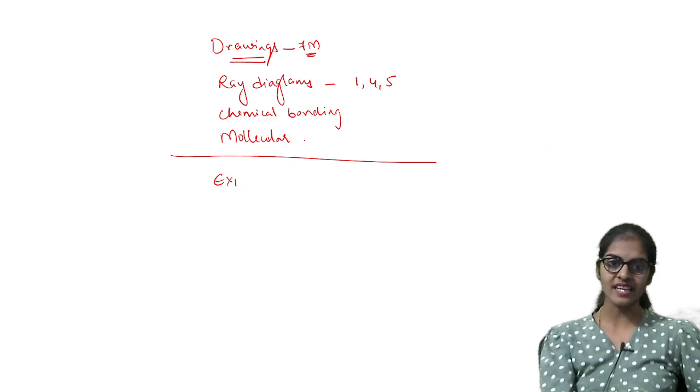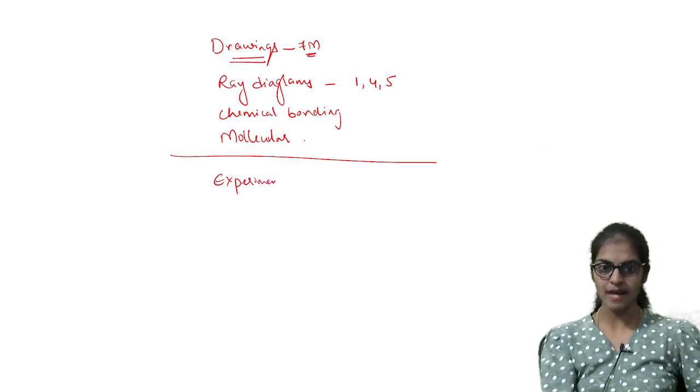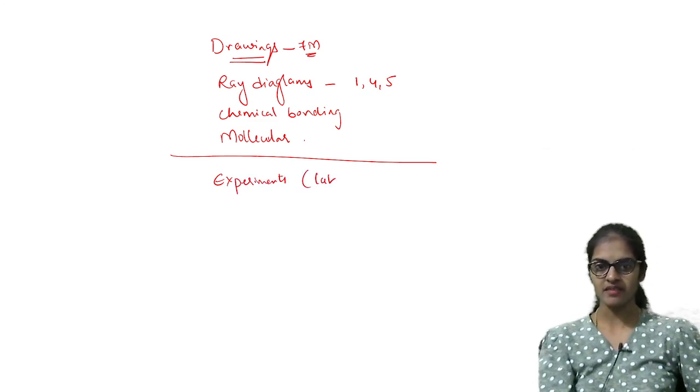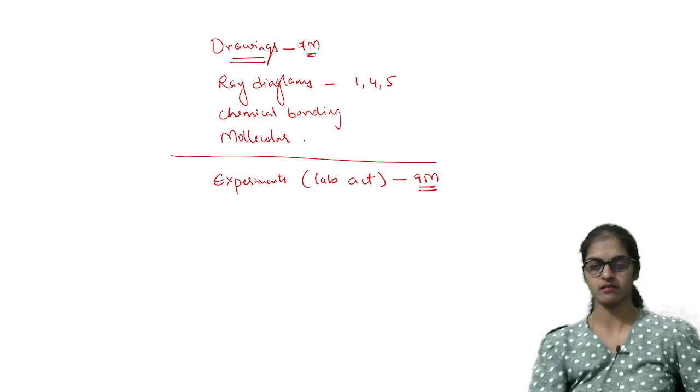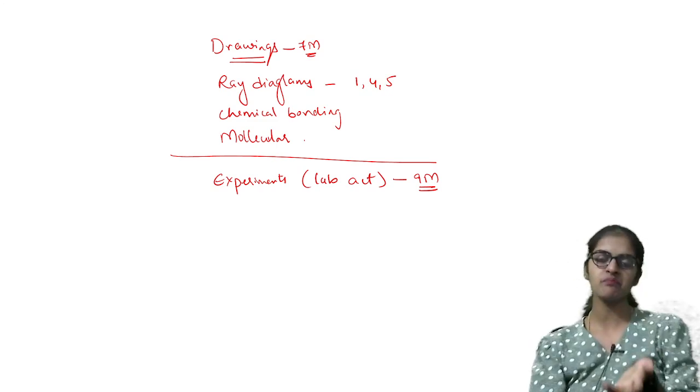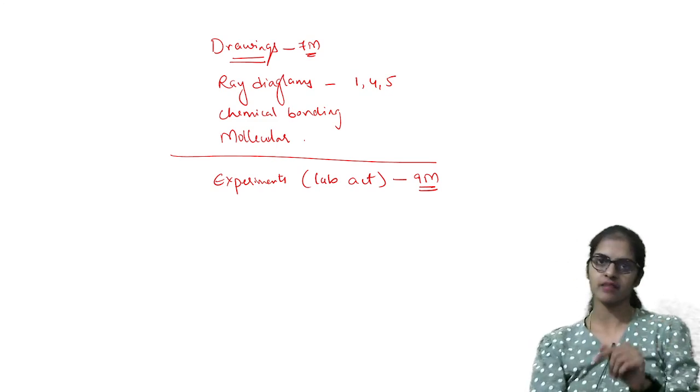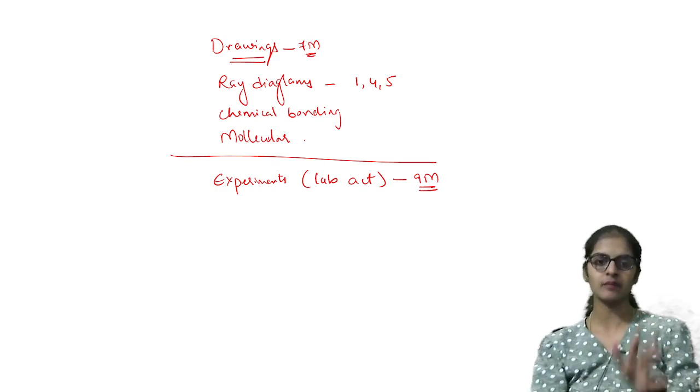Apart from that, now experiments you have in the textbook, lab activities. You have lab activities in the textbook. From these lab activities, you will get nine marks. So one essay question, one very short and one part B. So like that you will get from these experiments.